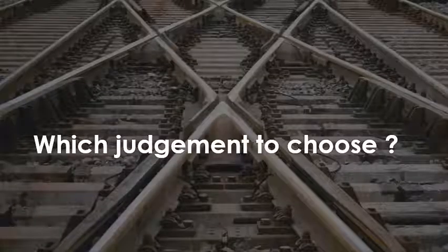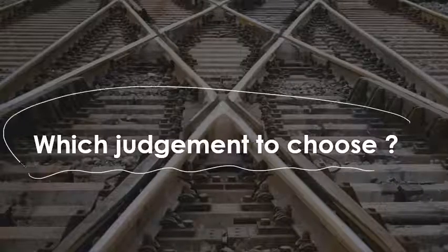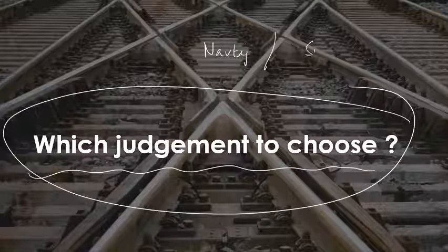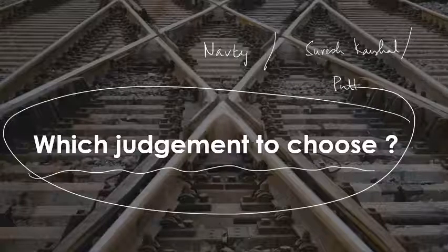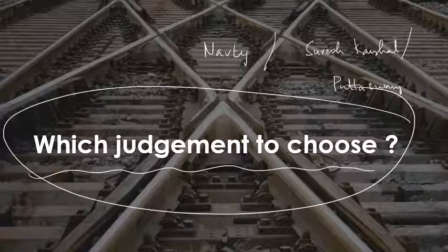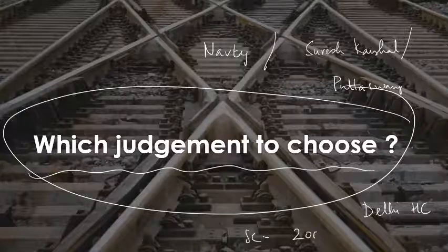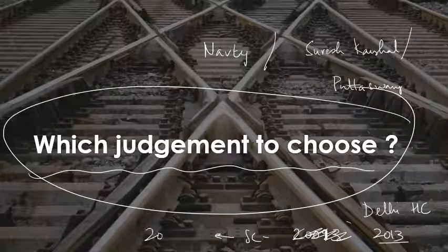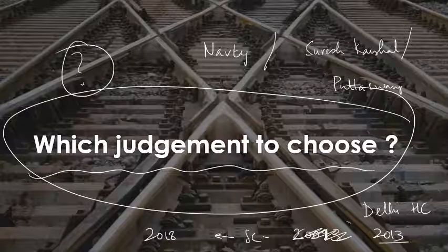These two — statutes and judgments — are the original sources of law and therefore the most reliable. Now, from the Wikipedia paragraph we saw several judgments: Navtej Singh Johar, Suresh Kaushal, Puttaswamy, the Delhi High Court judgment, the Supreme Court judgments of 2009, 2013, and 2018. Which one do you choose?